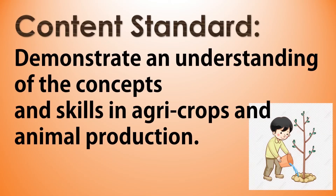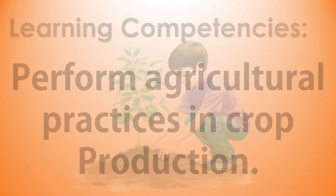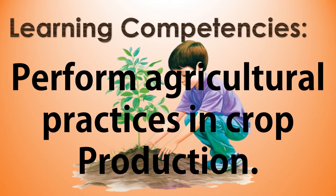Content Standard: Demonstrate an understanding of the concepts and skills in agro-crops and animal production. The learning competencies include performing agricultural practices in crop production such as site selection, land preparation, seed selection, crop selection, planting, and transplanting.